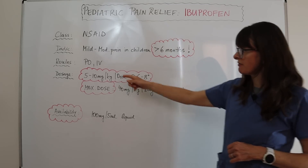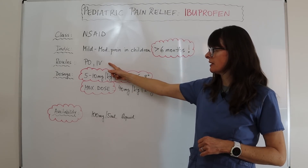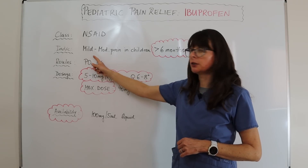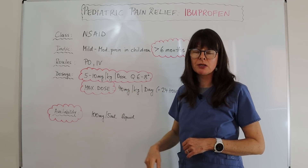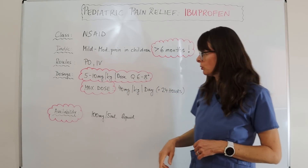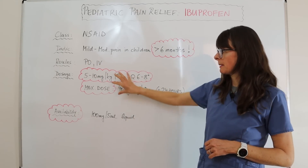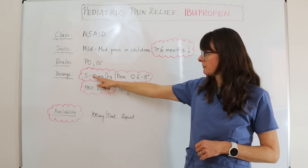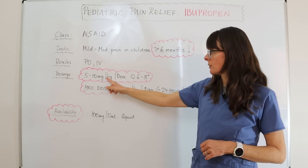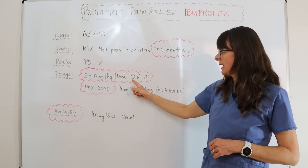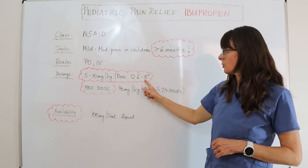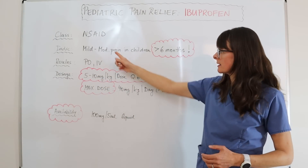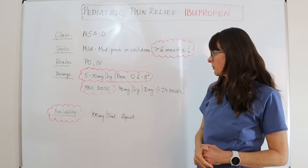Ibuprofen is available in PO or IV form, although mostly you'll see it administered by mouth. The dosage to remember is five to ten milligrams per kilogram per dose, every six to eight hours, as needed for mild to moderate pain.